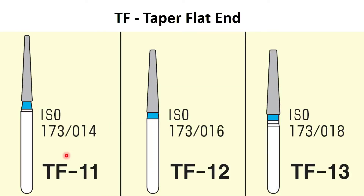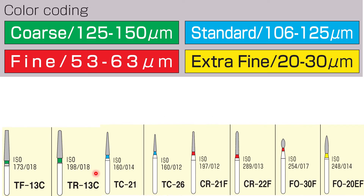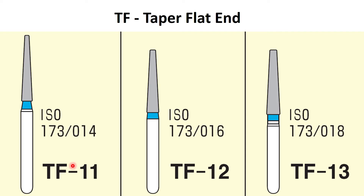Each burr is uniquely identified with its standard ISO number and model number which also has significance. For example in this TF13C, TF stands for taper flat end and C stands for its coarse particle size, which is also indicated by green color coding in the neck. This TF series of burrs have a tapered head with flat end.